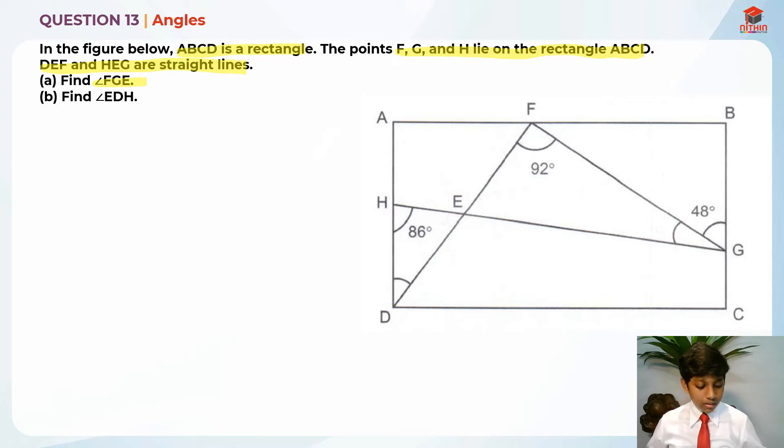So first, we have some information over here that this is 48 degrees and this is 86 degrees. So I'm going to try to make use of either one of this information first. And we also have this 92 degrees over here. And another information that we have is that this is a rectangle. So all the angles are 90 degrees over here, and the rectangle has two parallel lines. So here, here and here.